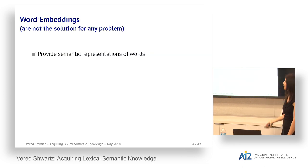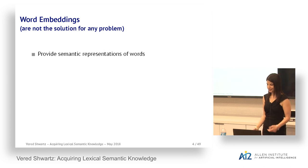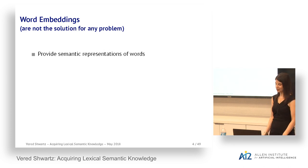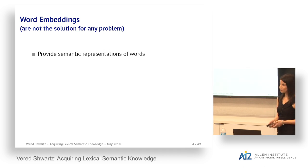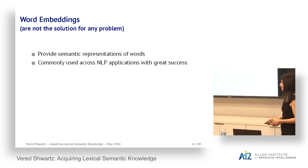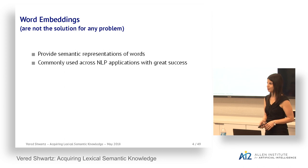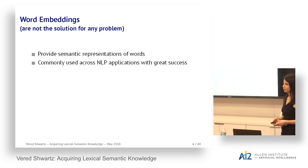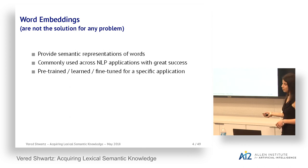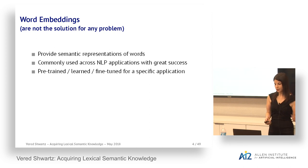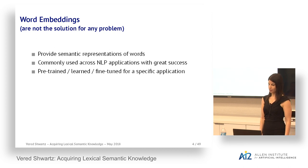This leads me to the point that word embeddings are not the solution for all problems. They provide semantic representations of words, and most NLP papers in the last five years have used word embeddings with great success, contributing to the performance of many applications. They can be pre-trained or learned for a specific task, and can be fixed or fine-tuned during training.